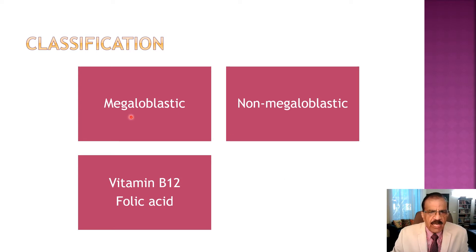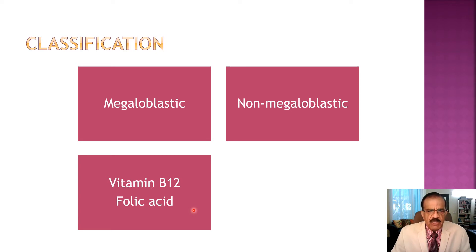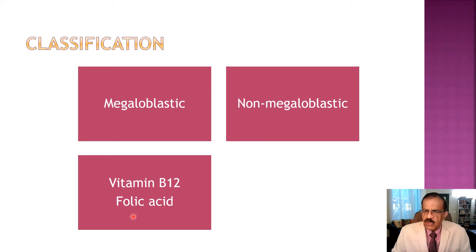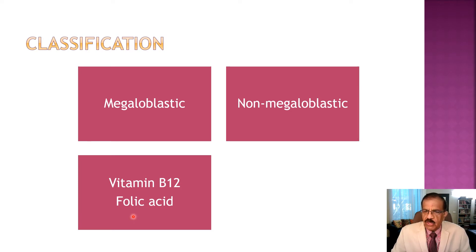In the megaloblastic group there are two main conditions. Once you find a macrocytic picture in the peripheral blood and a megaloblastic picture in the bone marrow, you are most probably dealing with either vitamin B12 deficiency or folic acid deficiency. Both are essential for DNA synthesis and both will result in the same clinical and hematological picture. There is no easy way to differentiate between them except by measuring vitamin B12 and folic acid levels — these two conditions are largely indistinguishable clinically.